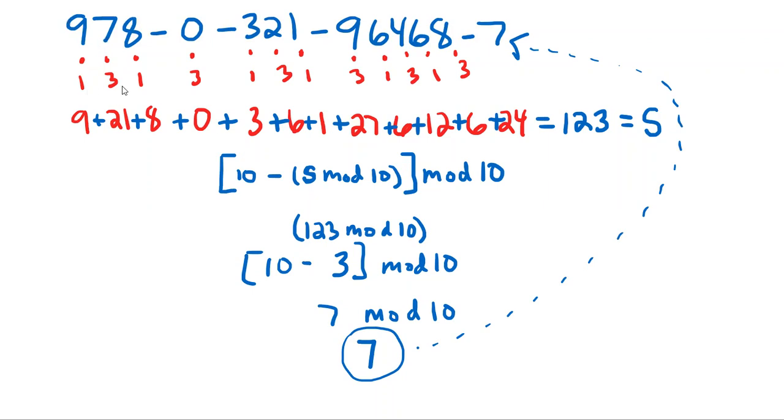Again, you multiply by 1, then by 3, then by 1, then by 3. And you work your way all the way across. Obviously, you're leaving the check digit. You're not using that. This is what you're going to verify here. And we see that we do get the correct check digit. That's the algorithm for that.